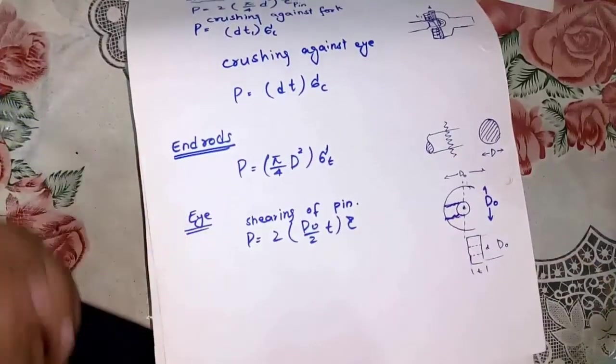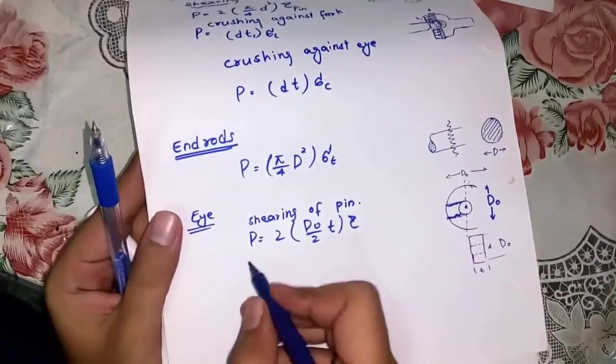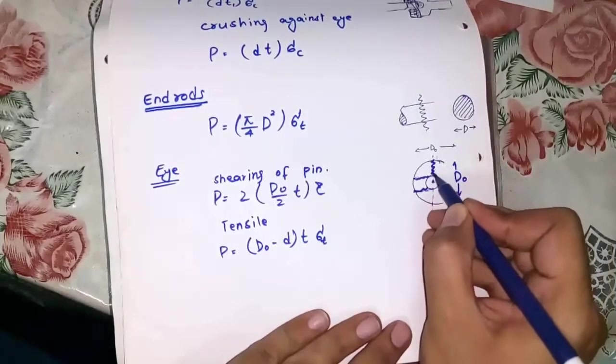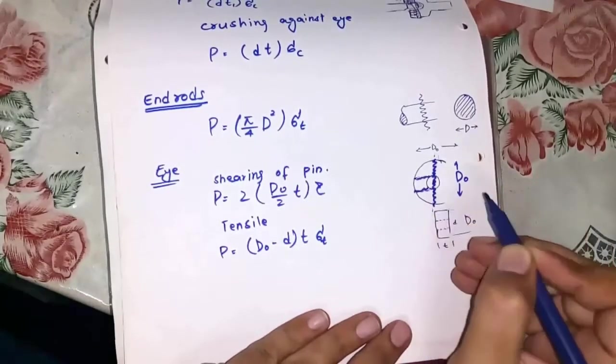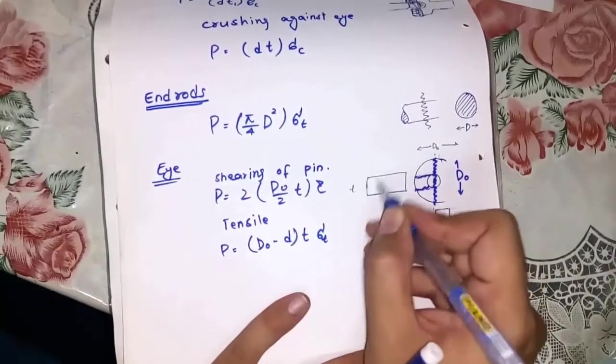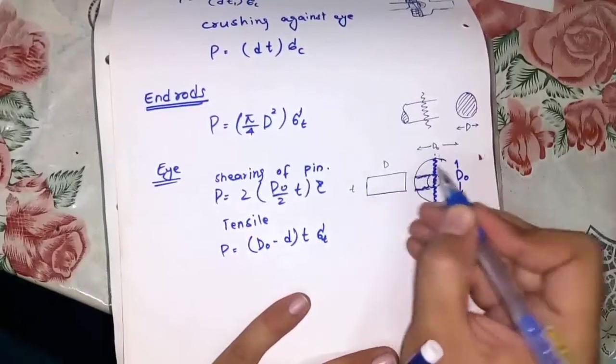Second failure of eye is tensile failure. It may fail like this. Let me draw cross-sectional view. t is thickness of eye. Diameter of eye is d0.